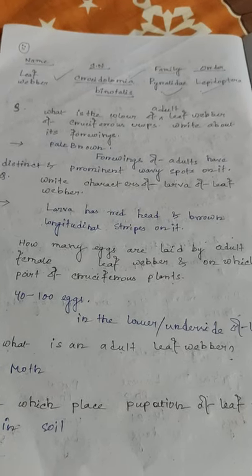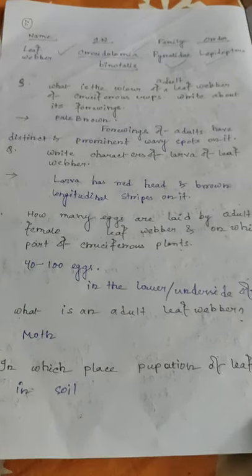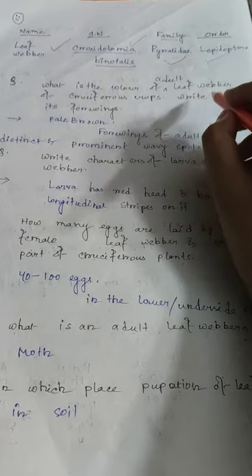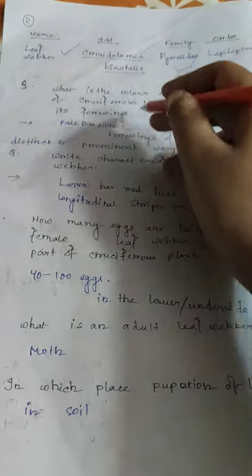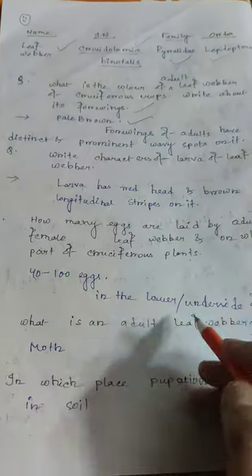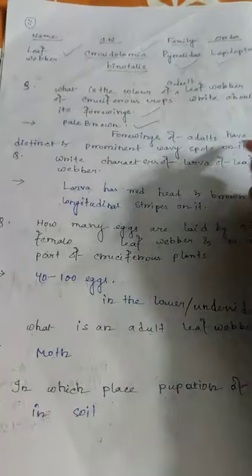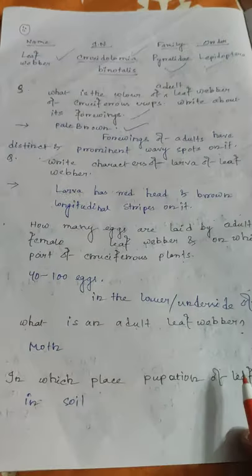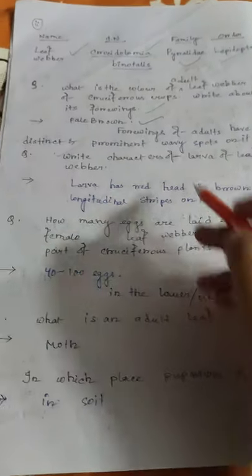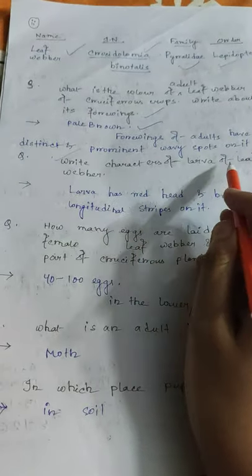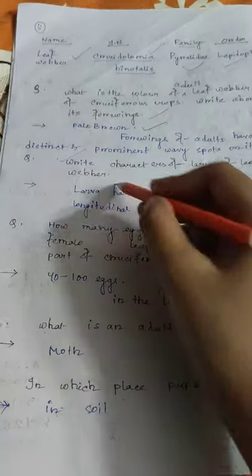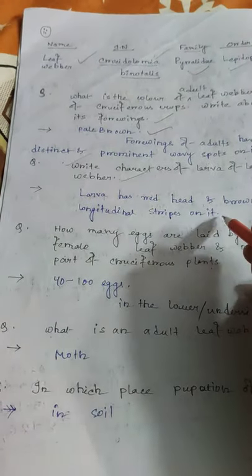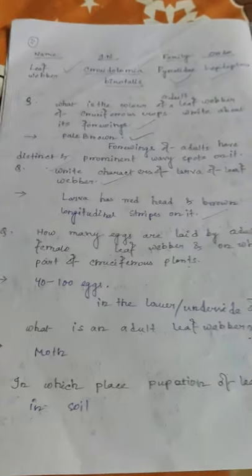The adult leaf webber is pale brown in color. The forewings of adults have distinct and prominent wavy spots. Larvae have a red head and brown longitudinal stripes on the body.